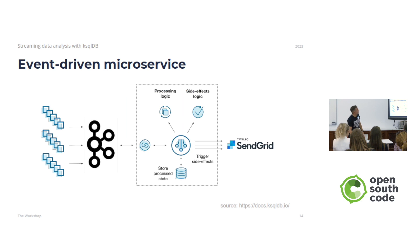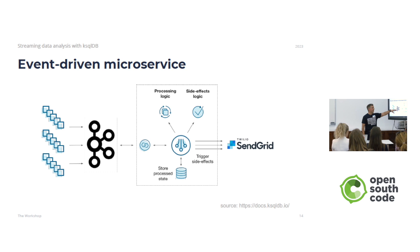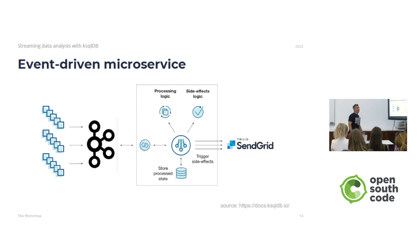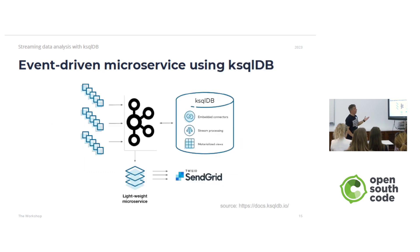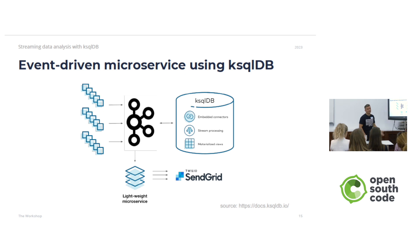Another use case is an event-driven microservice that reacts to different events. We use Kafka Connect to ingest events, have some stream processing that triggers side effects, and a streaming application that also handles state. You have to take care of that state. Using ksqlDB, we could have all the connectors, do all the streaming processing, and produce specific events to be consumed by different microservices to trigger the desired side effects.